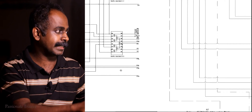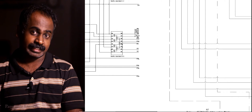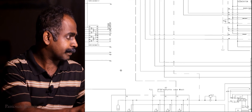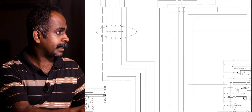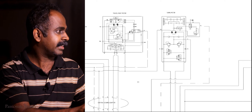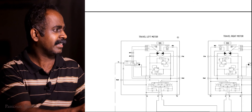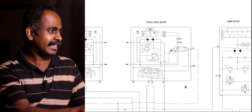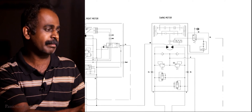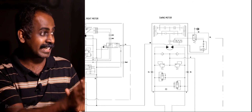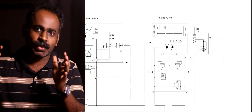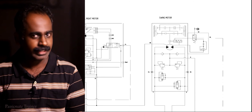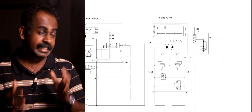Let's find the three hydraulic motors confirmed in the Sany 140 brochure. Moving up in the drawing, here you can see the left side travel motor and right side travel motor. Then here you can see the swing motor. Next, let's trace the drawings to find the control valve block — sometimes called a valve bank or manifold block. Let's understand where the control valve unit is located.